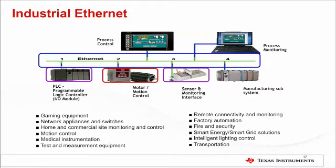Most industrial applications involving Ethernet use the same protocols as used in home and office applications, except with rigorous consideration for the environment in which industrial equipment must operate — for example, extended temperature range, noise rejection, immunity to vibration, etc. The TM4C129X devices have been developed to be used in industrial, home, and building automation applications, some of which are shown on the screen.